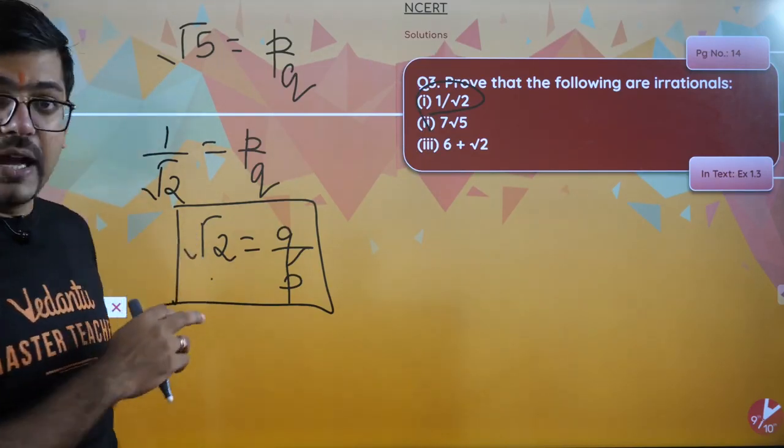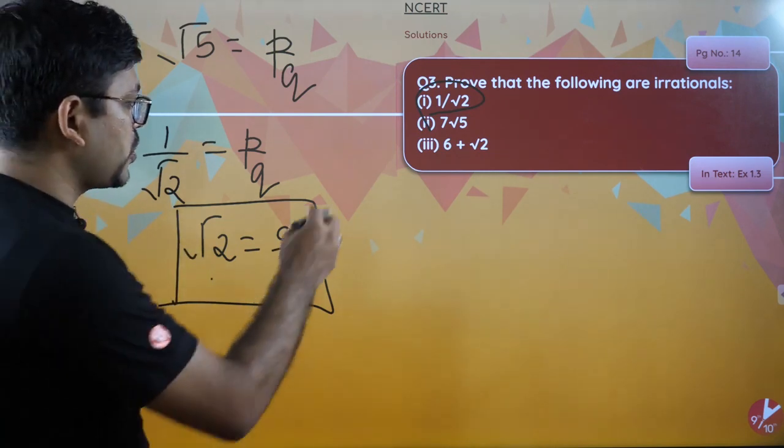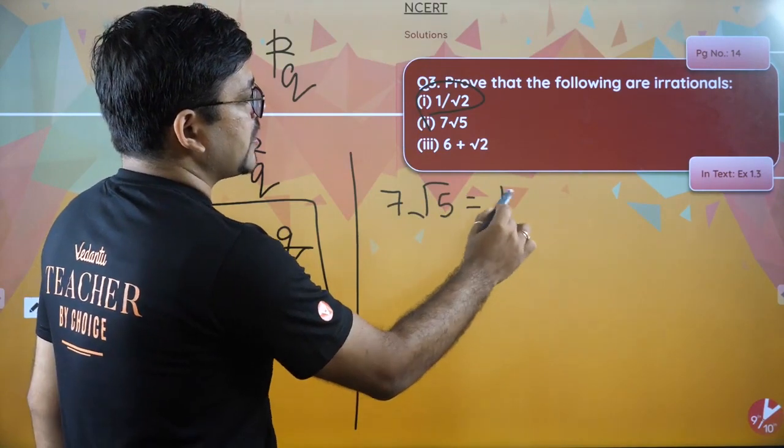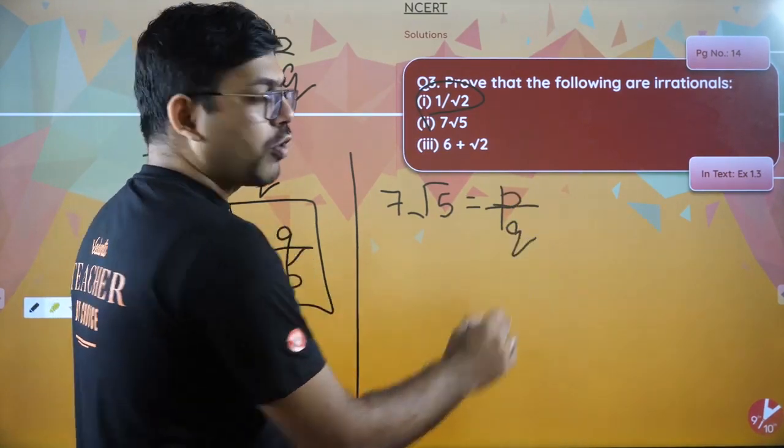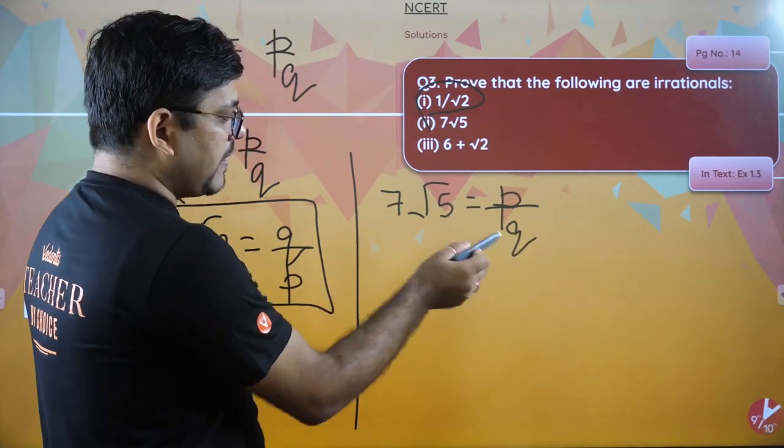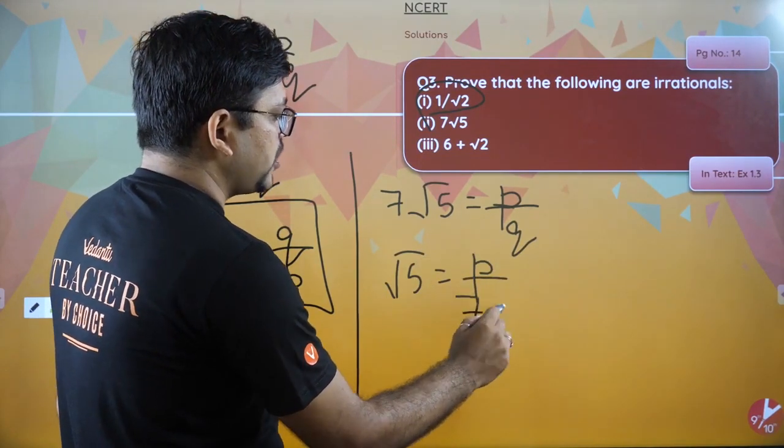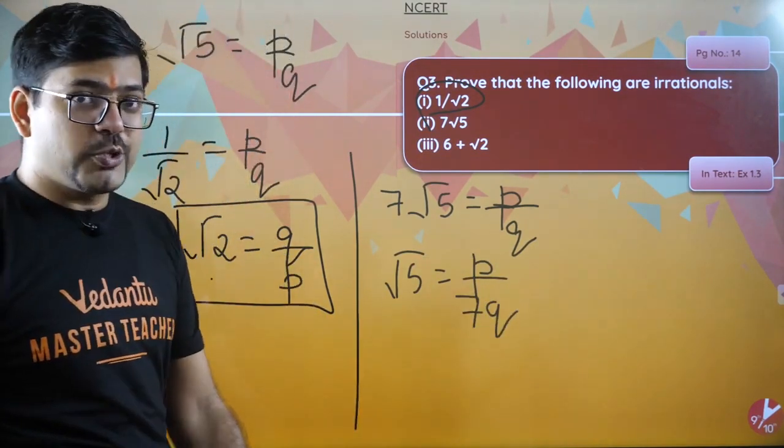So let's move on. If you understood, same for 7 root 5. If I talk about 7 root 5, exactly same method: 7 root 5 equals p by q, method of contradiction. You will send this 7 to this side, so you will get root 5 equals p upon 7q.